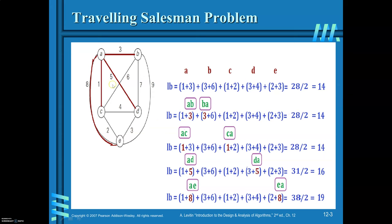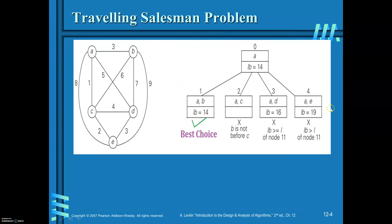If you decide to go to B, the lower bound is 14. If you decide to go to C, it is 14. If you decide to go to D, it is 16. And from A to E, the lower bound is 19. The same values are shown in the state space tree: A to B, A to C, A to D, and A to E. Since A to B and A to C both have lower bound 14, and B appears first, we select that node and extend the branch.